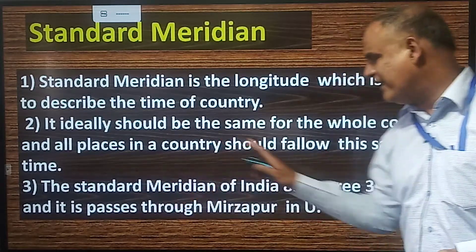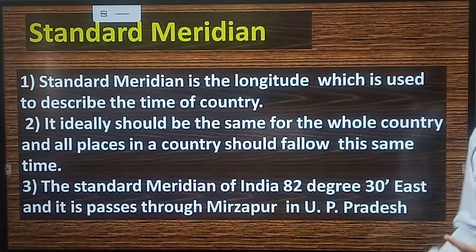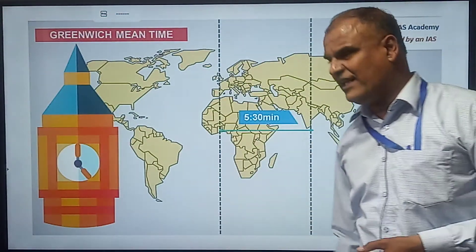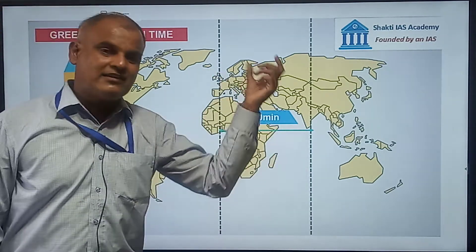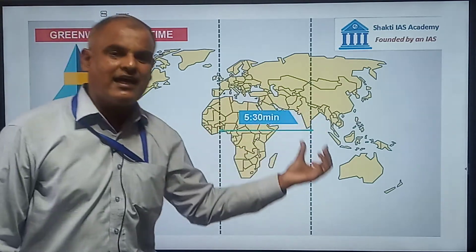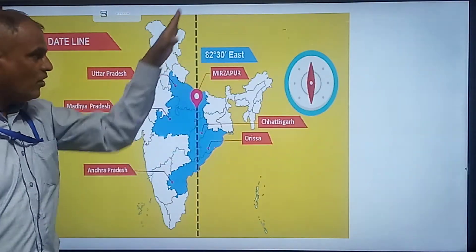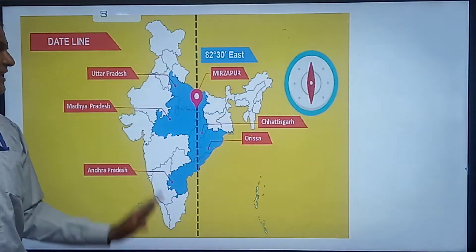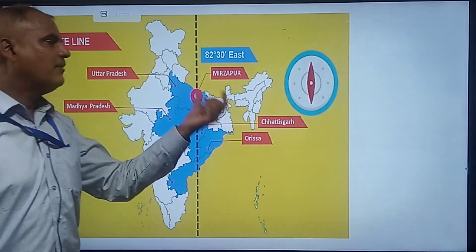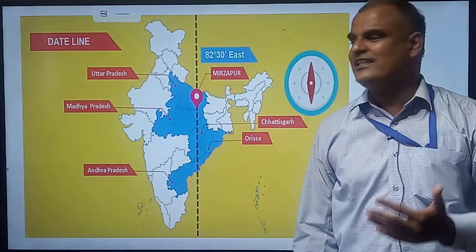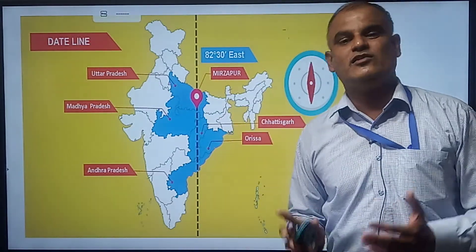India's standard meridian is 82 degrees 30 minutes east longitude, located at Mirzapur in Uttar Pradesh. This is 5 hours and 30 minutes ahead of the Greenwich Prime Meridian (zero degree). It passes through the states of Uttar Pradesh, Chhattisgarh, Odisha, and Andhra Pradesh.